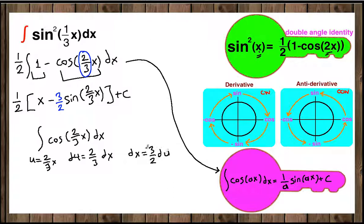Now let's write everything in terms of u. We have cos(u), and instead of dx we're going to write 3/2 du. You can write 3/2 in front of the integral and leave the u here.